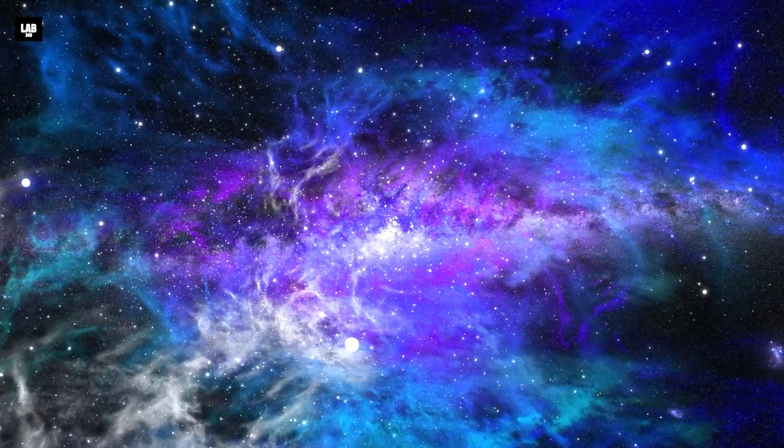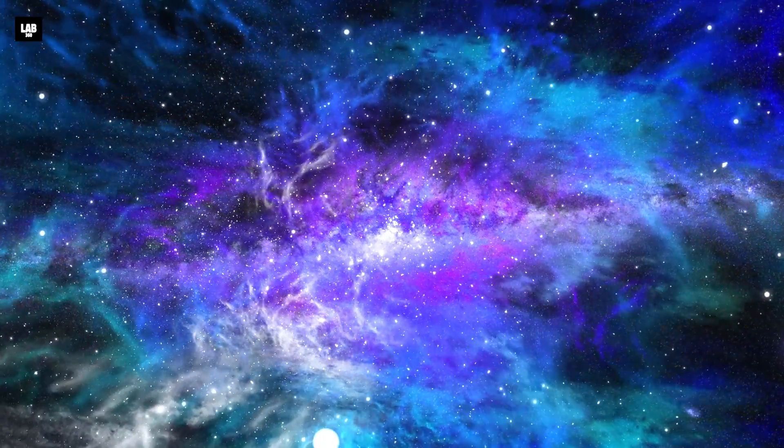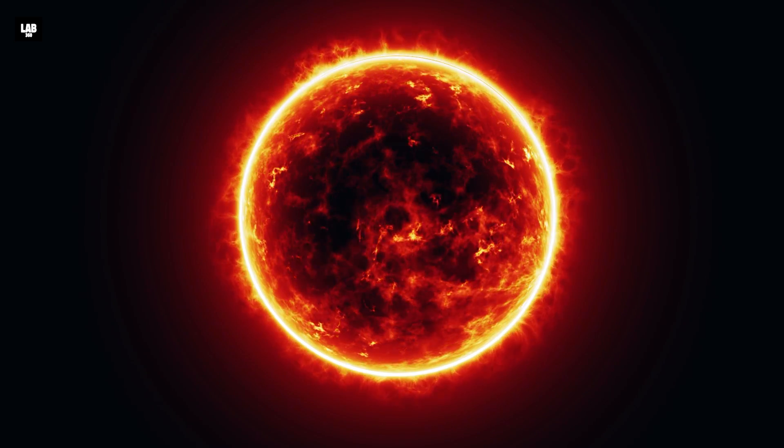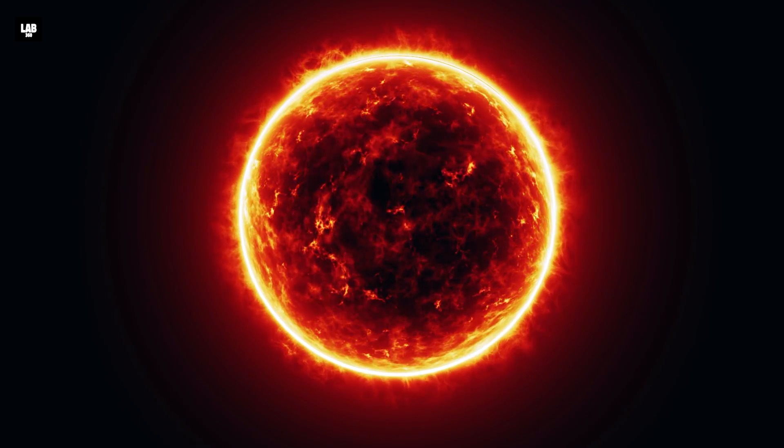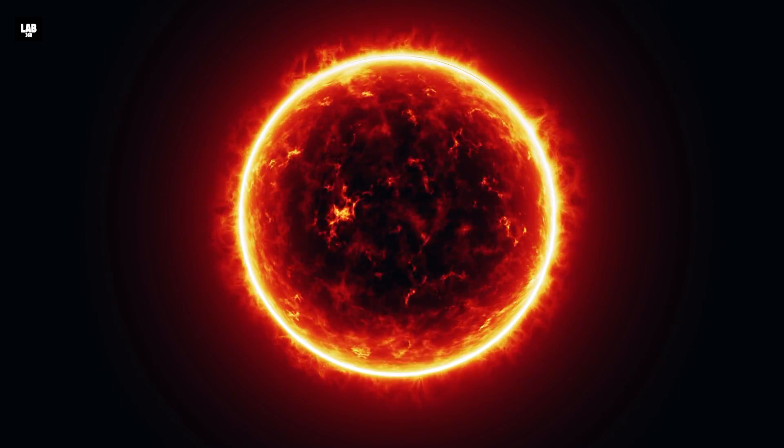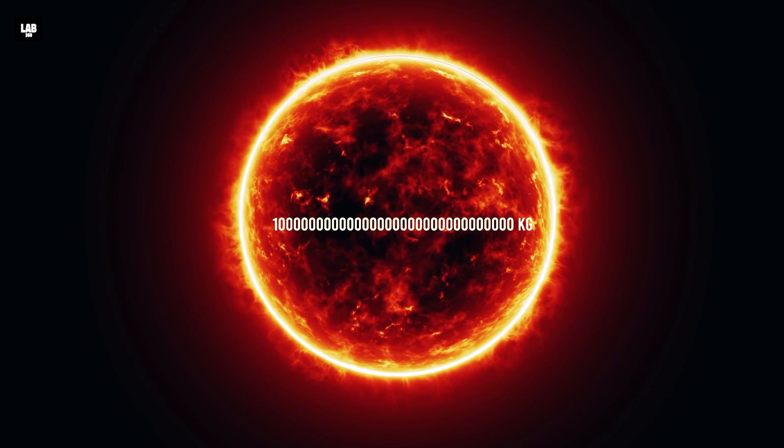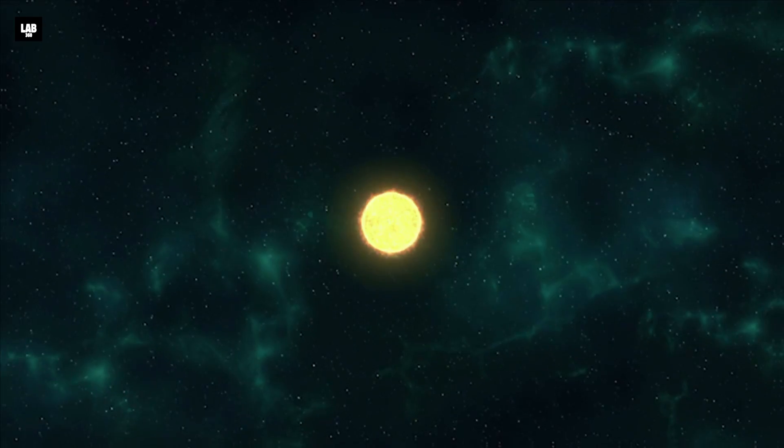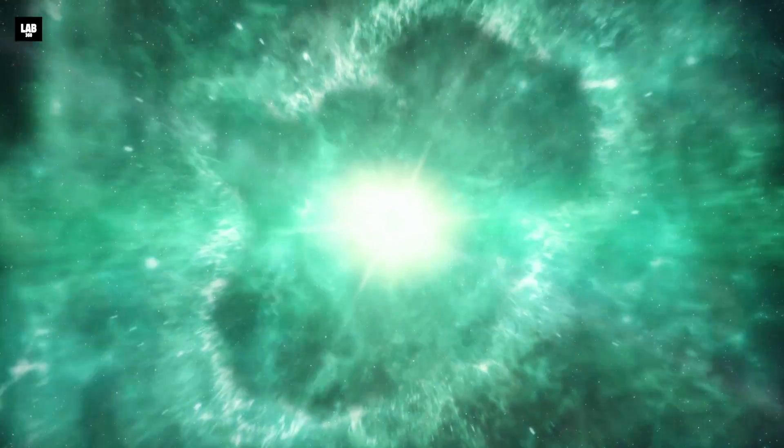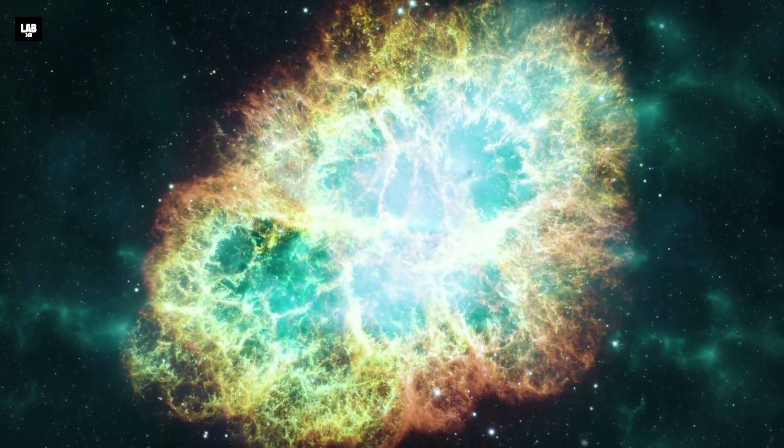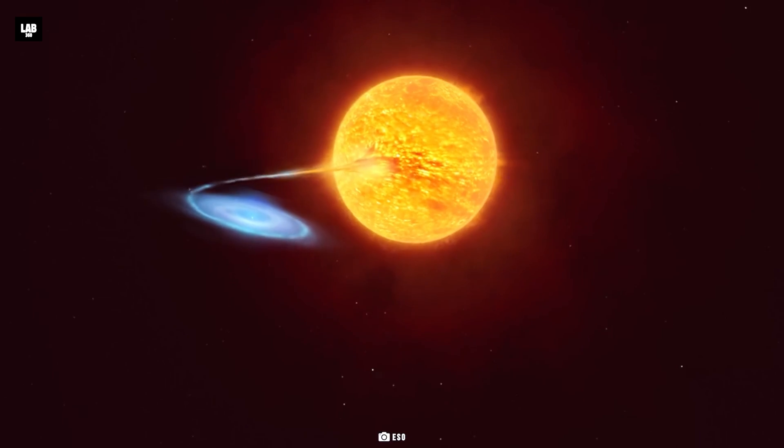There are two ways a supernova can occur. It can occur during the last stages of a dying massive star - by massive, we mean a star which weighs at least 10^31 kilograms. The massive star suddenly implodes during its last stages, unable to hold against gravity, resulting in a supernova.